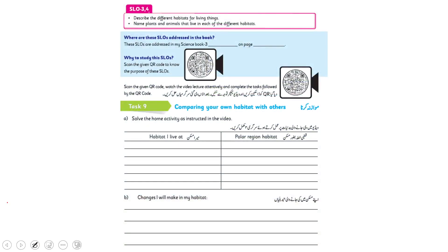According to SLO Number Three and Four, the students will be able to describe the different habitats for living things, and they will also be able to name the plants and animals that live in each different habitat.